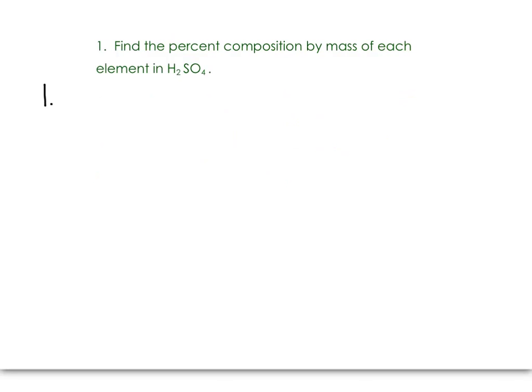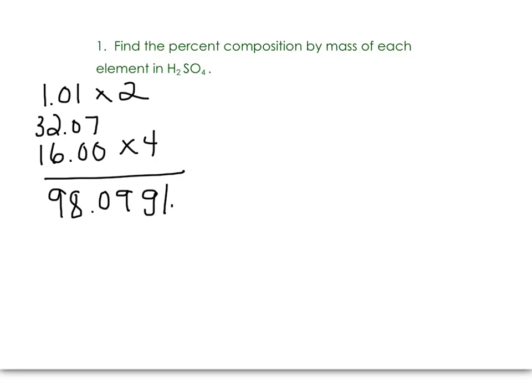Hydrogen is 1.01, and there are two of them. Sulfur is 32.07, and there's just one sulfur. And then the molar mass of oxygen is 16, and there are four oxygens. When you add that all up, you get 98.09 grams per mole. That's the molar mass of the compound.